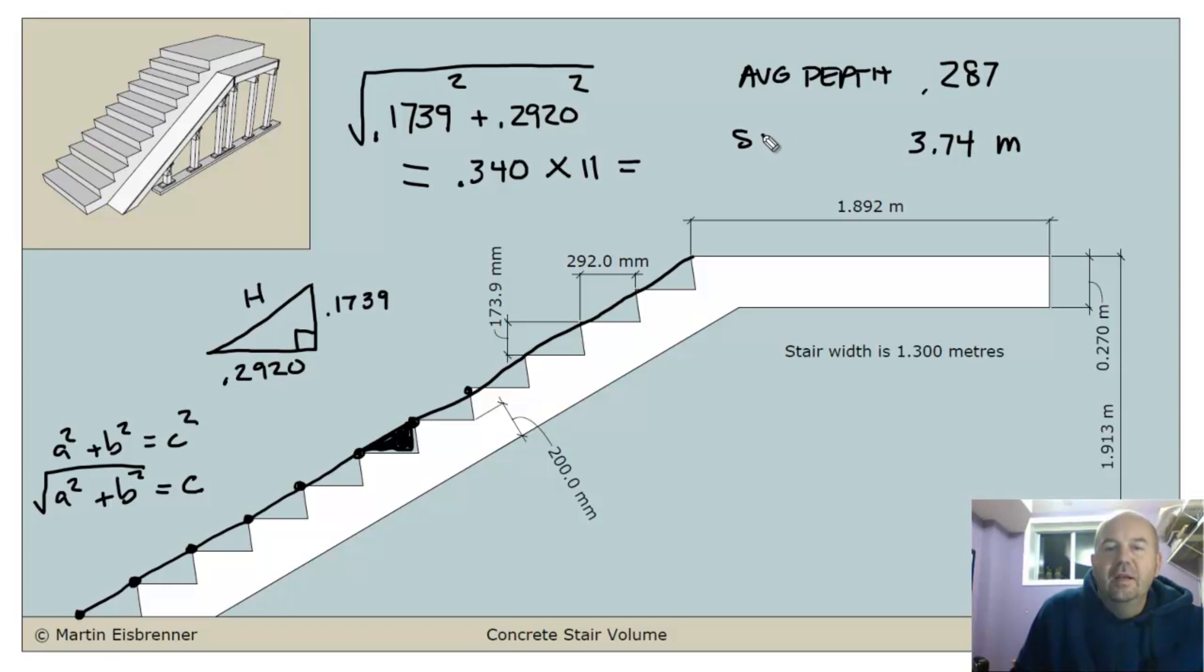3.74 meters. And this is stair length. Sort of running out of some room there. Stair length, 3.74. I want you to take note right away that this line is similar. Not just similar, but actually it's exactly the same as the length of this line from top to bottom. This is going to be important down the road here as we do some calculations for the landing.